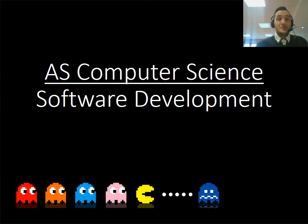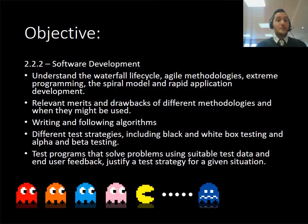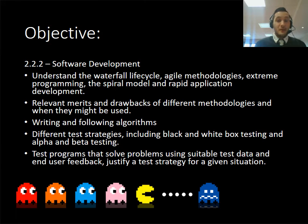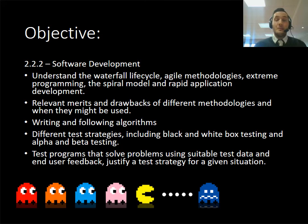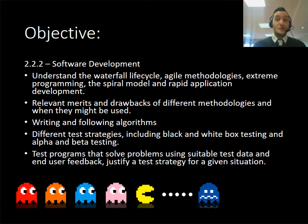Welcome to this video on AS Computer Science. Today we're going to talk about software development. In the lessons we've been talking about different methodologies and different ways that we approach software development. We're going to talk again about the waterfall cycle, agile, extreme programming, spiral, and rapid application development. There are different strengths and weaknesses to each of these, and the other bullet points — writing algorithms, testing, and solving problems — will be covered in later lessons.